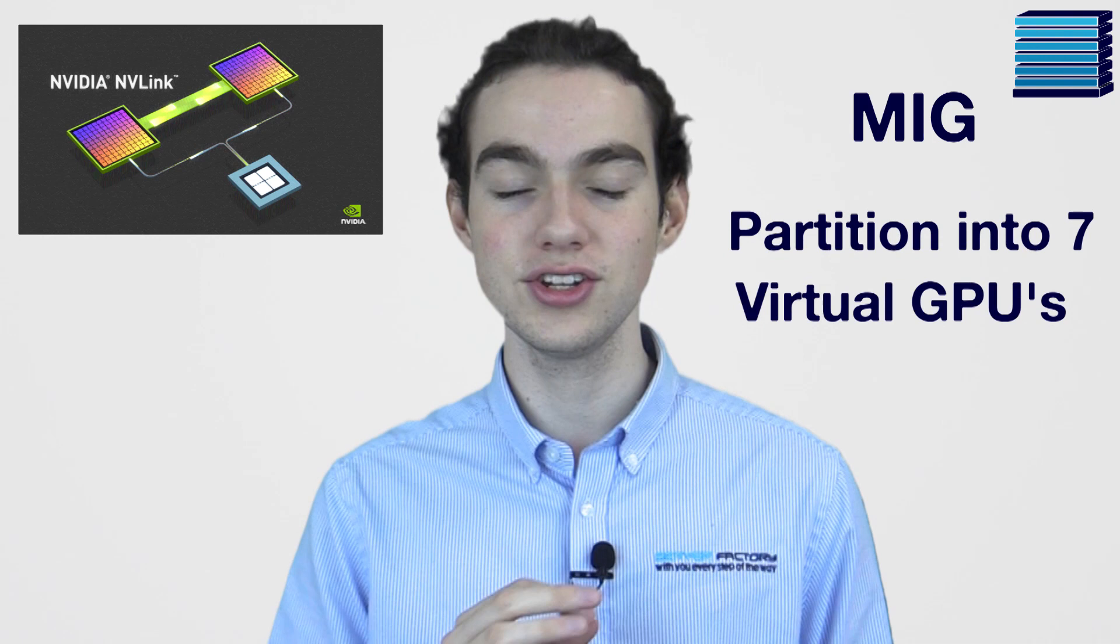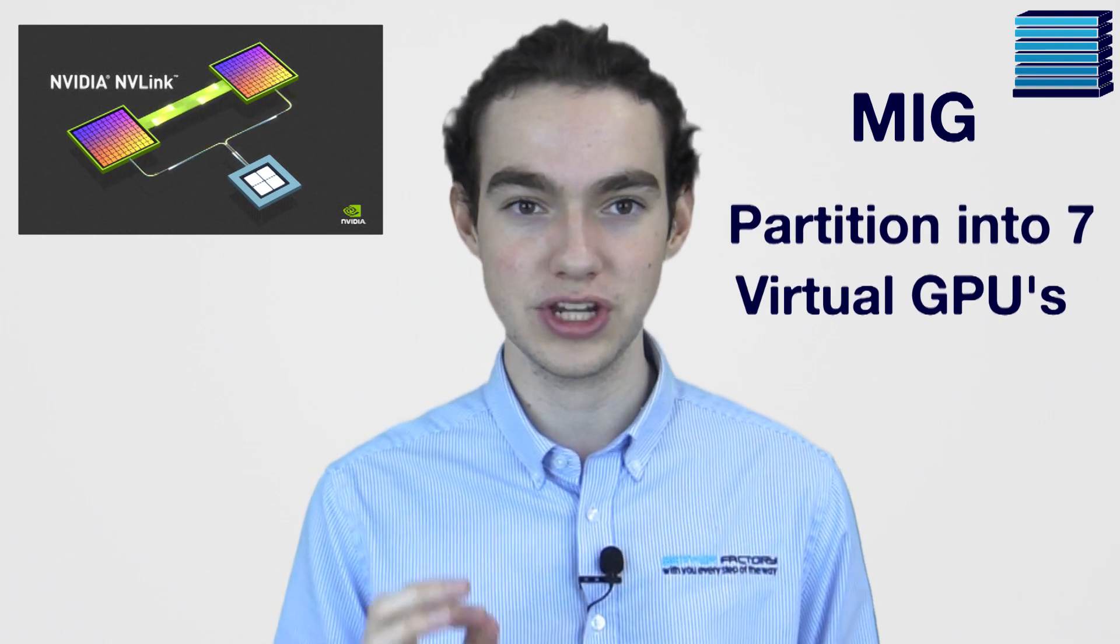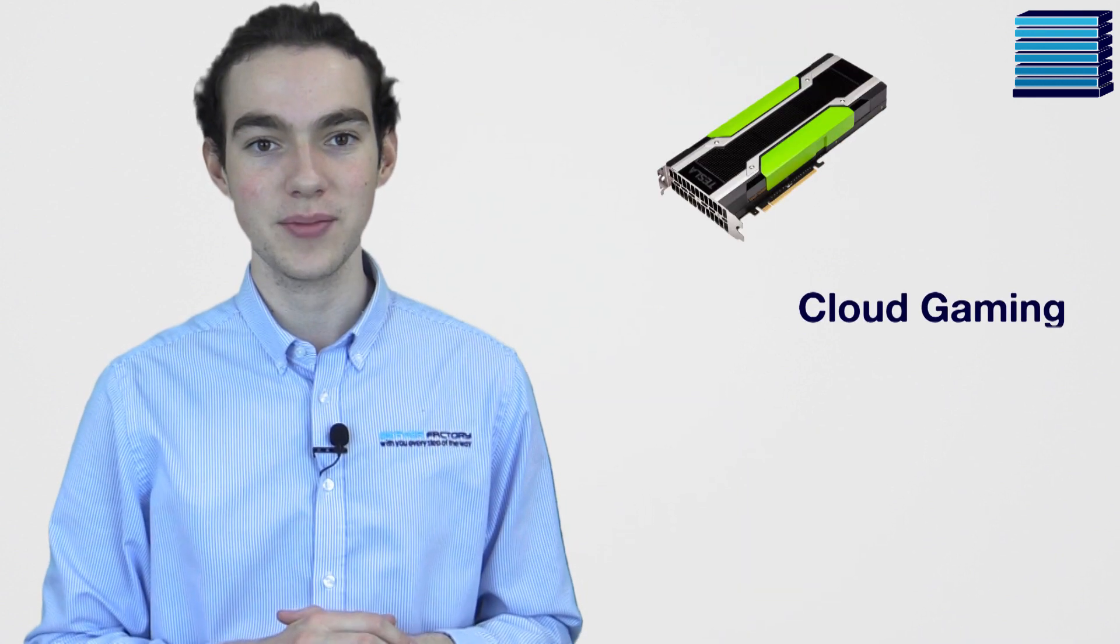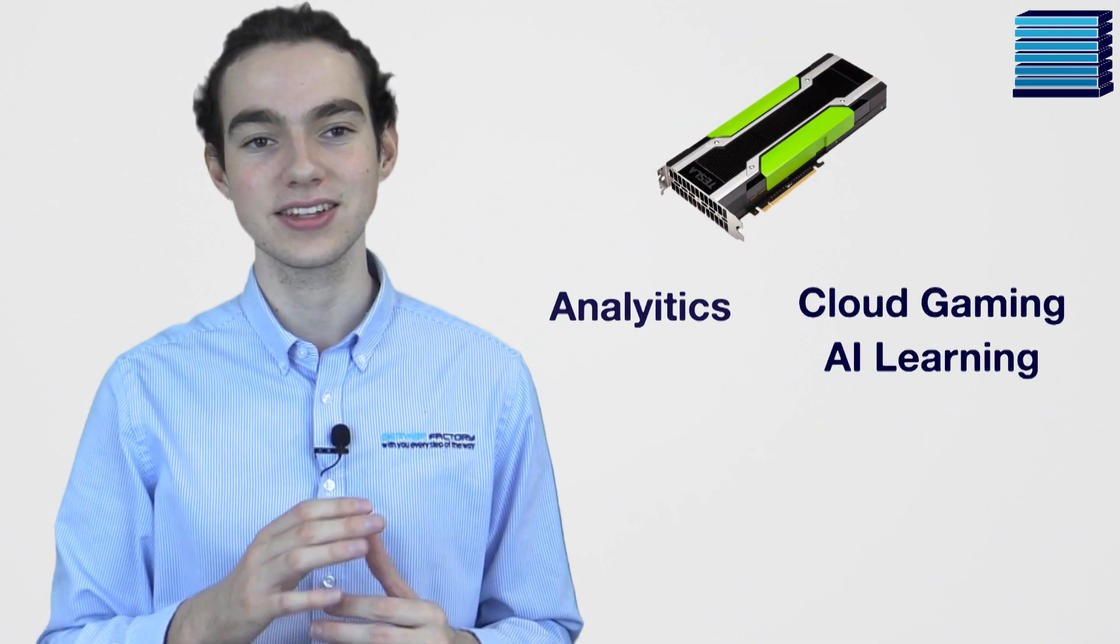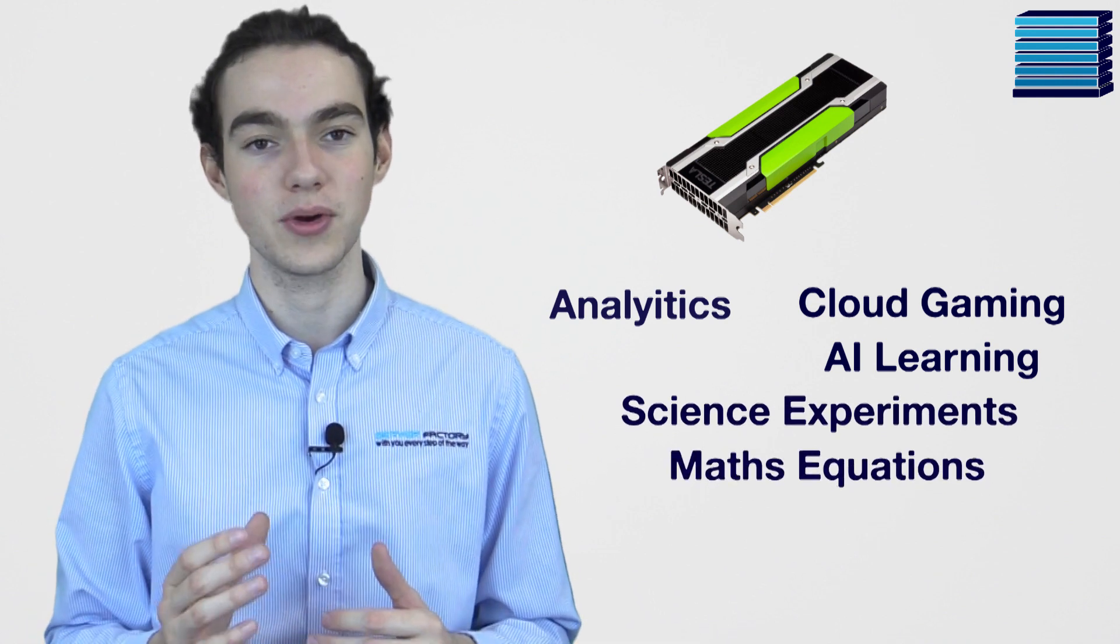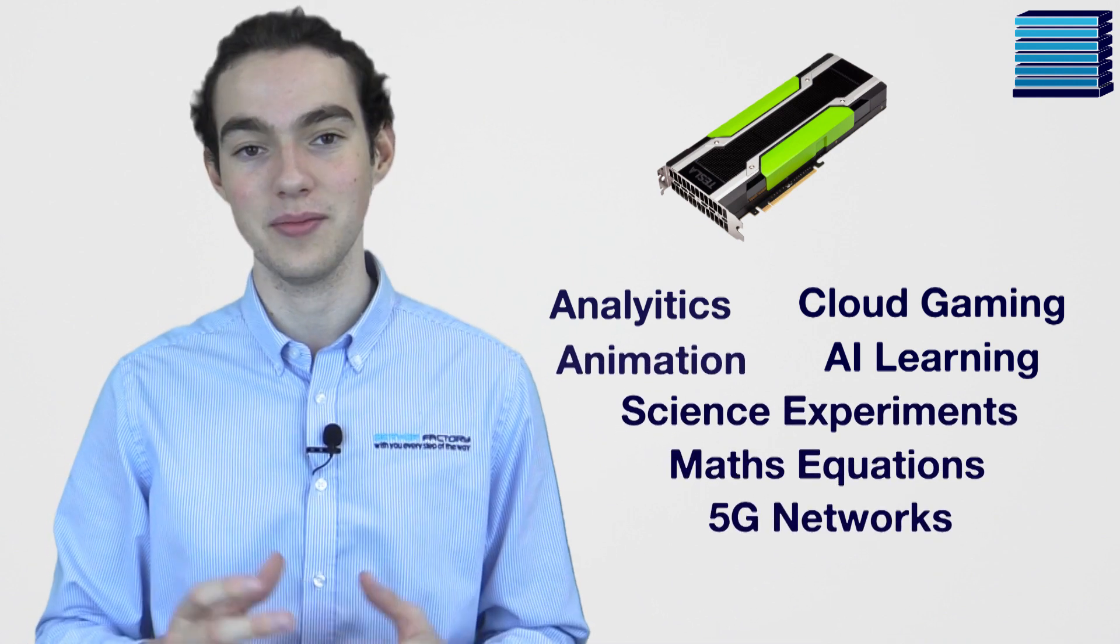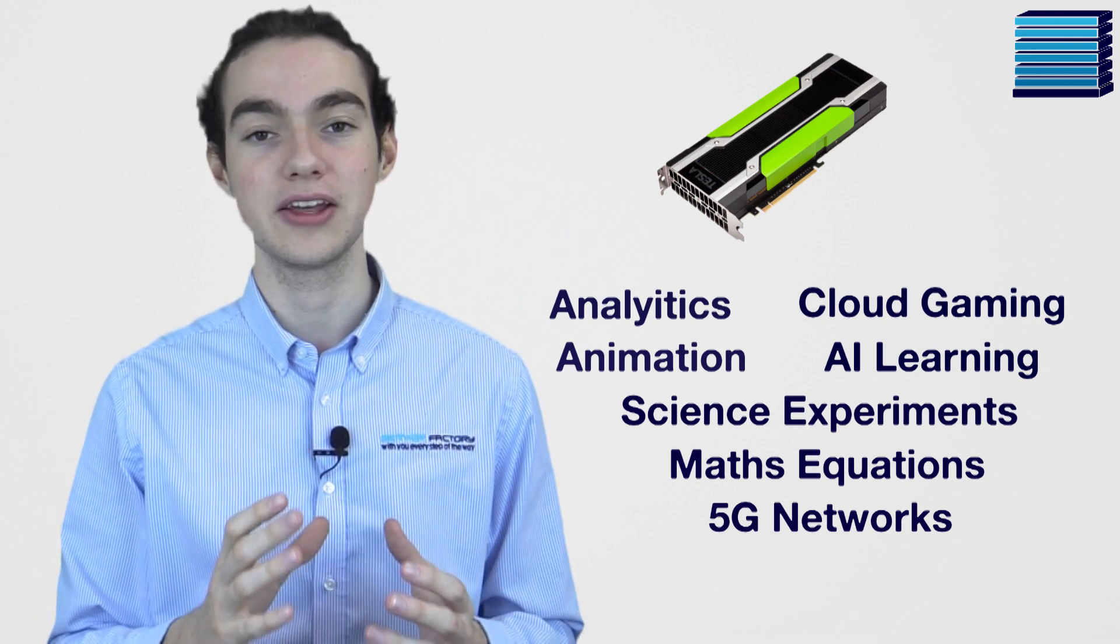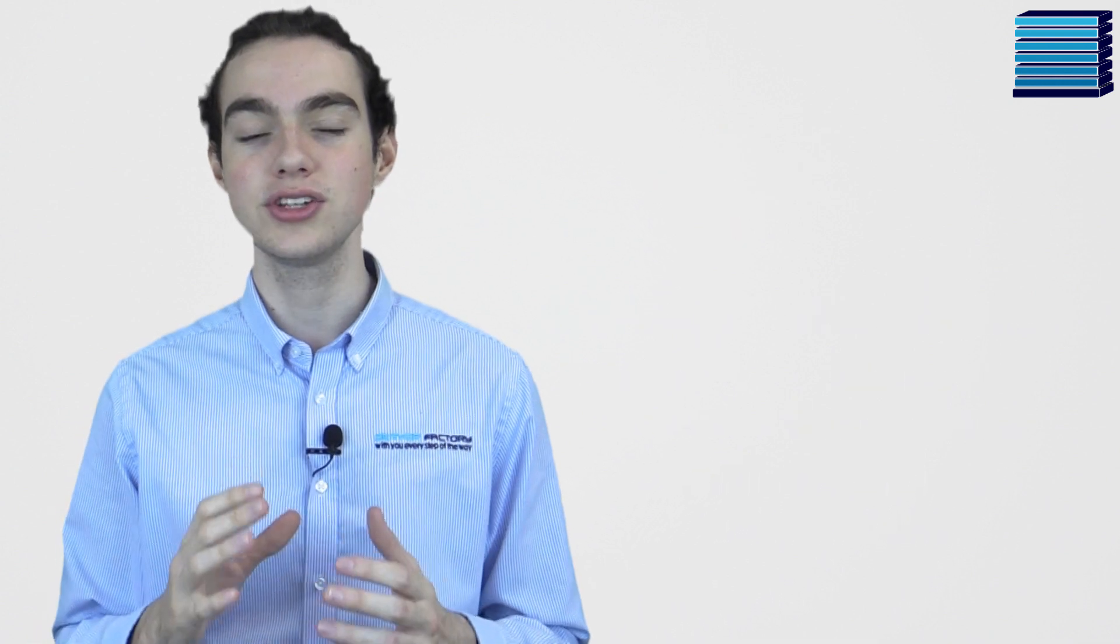MIG allows you to partition the GPU into up to seven virtual GPUs, which can each be put to a different task. For example, you can now have one GPU powering cloud gaming, AI learning, analytics, scientific experiments, mass equations, 5G networks, and animation. This is a really cool feature that gives you a lot of flexibility, especially for users that aren't planning on building a supercomputer, but just need several different tasks running at once.